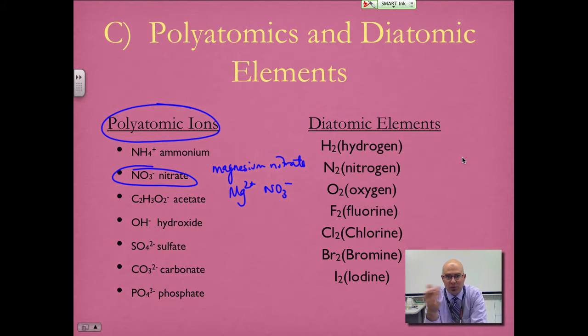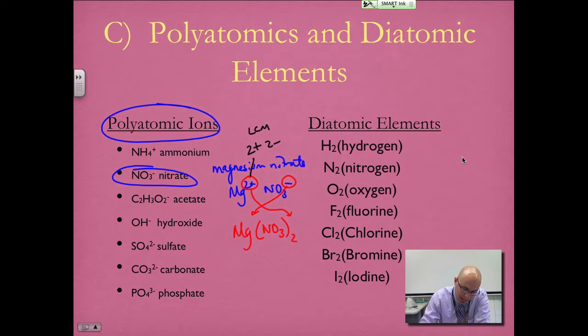Using either the crisscross method or balancing charges, we get 2+ and 1-. Magnesium and nitrate would need two nitrates to balance. I prefer to think of it as 2+ and 2- being my least common multiple, so I need one magnesium and two nitrates. It's very important to go from that word, magnesium nitrate, to the formula Mg(NO3)2.